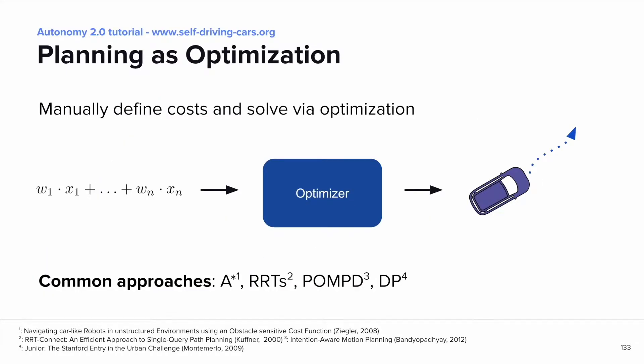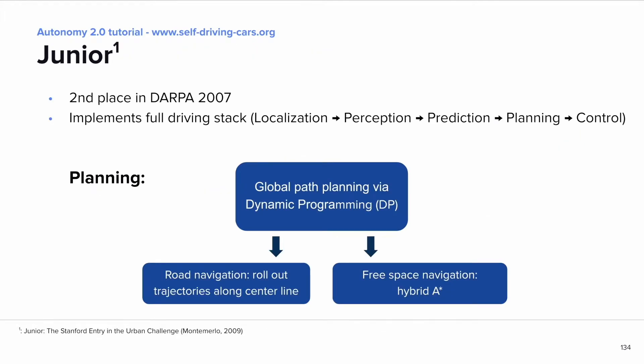Let's look at some important planning methods. We begin with a classical robotics approach: manually defining a problem and a cost, and then solving it using optimization methods. Common approaches are A-star, rapidly exploring random trees, PalmDP solvers, and dynamic programming. On the next slide, we'll look at two works in more detail.